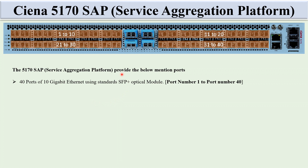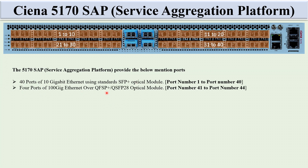There are also four ports of 100 Gigabit Ethernet — port number 41 to port number 44. These four ports use QSFP+ or QSFP28 optical modules.